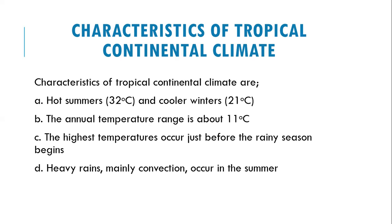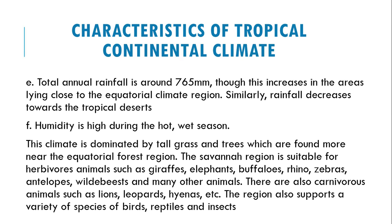The highest temperatures occur just before the rainy season begins, so high temperatures are experienced within this climate prior to the rains. This tropical continental climate is also characterized by heavy convectional rains that occur during the summer. The total annual rainfall is around 765mm, though this increases in areas lying close to the equatorial climate region, and similarly decreases towards the tropical deserts.